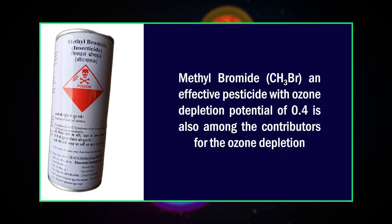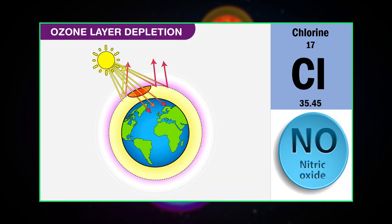The ozone depletion potential of halons ranges up to 10, and they are used in fire extinguishers. Methyl bromide, an effective pesticide with an ODP of 0.4, is also among the contributors to ozone depletion. Here we will specifically discuss ozone depletion by chlorine and nitric oxide radicals.